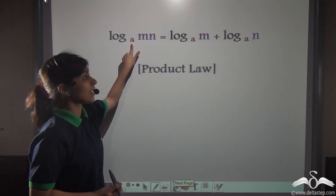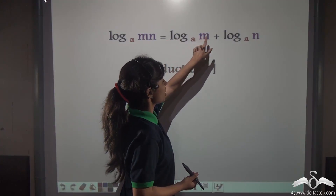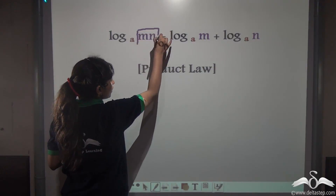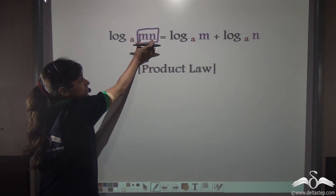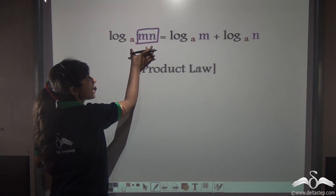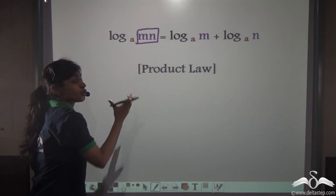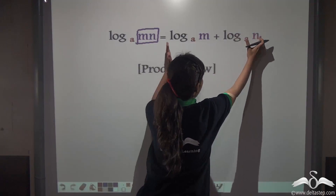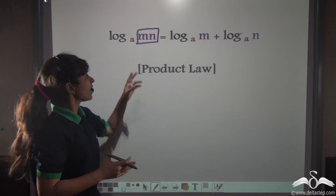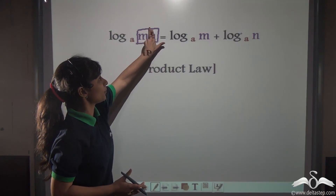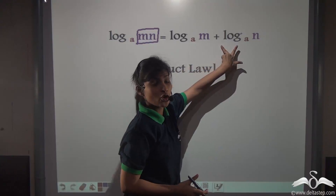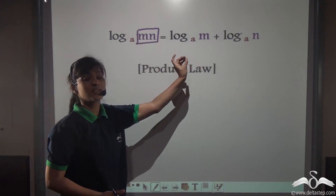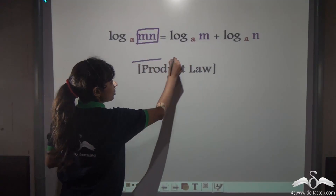Log of mn to the base a is actually equal to log m to the base a plus log n to the base a. This is the product of two numbers. So if you have a big number or a product of two big numbers, instead of finding out the log of such a big number, you can separate those two numbers, find out the log of them separately, and then add them up. This law is known as the product law.